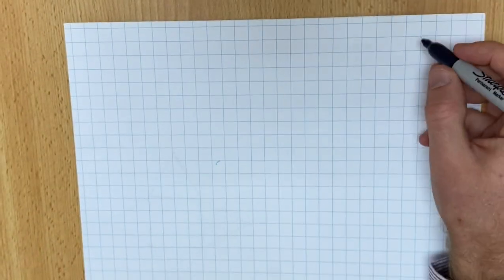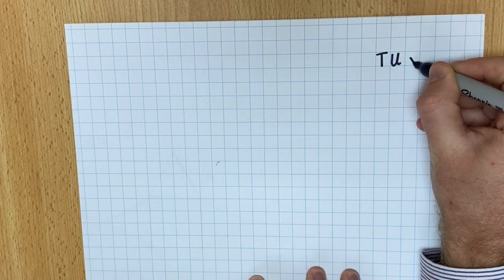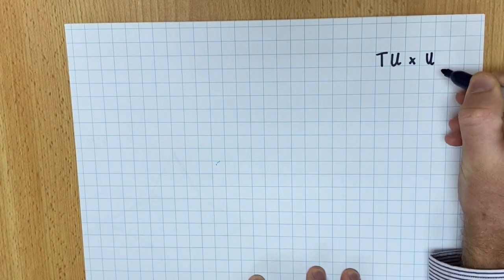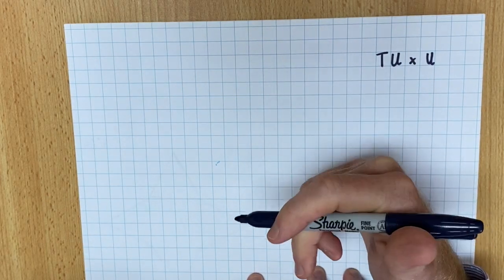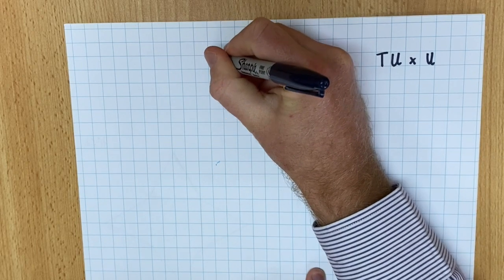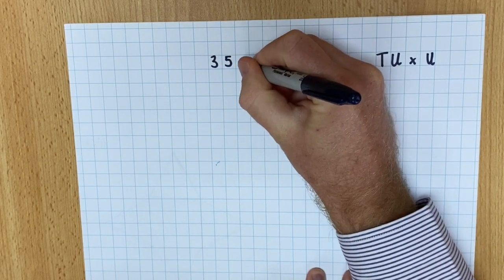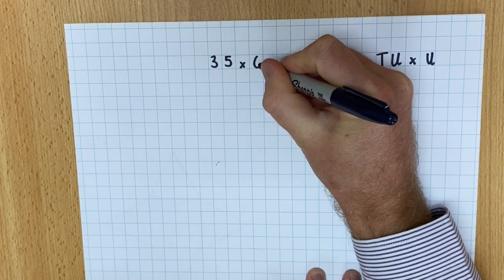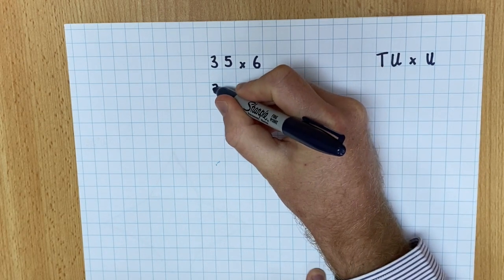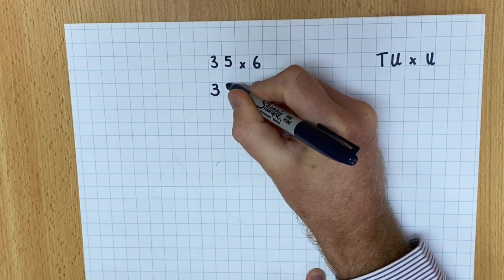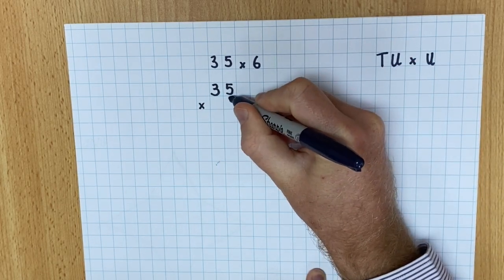We're going to start with multiplying a ten and a unit multiplied by a unit. I'm going to show you two ways to do this. I'm going to start with the easier way and then I'm going to go to the more complicated way. So if I've got a question like 35 multiplied by 6, here's how I'm going to set it out. I'm going to put 35 and I'm going to multiply it by 6.